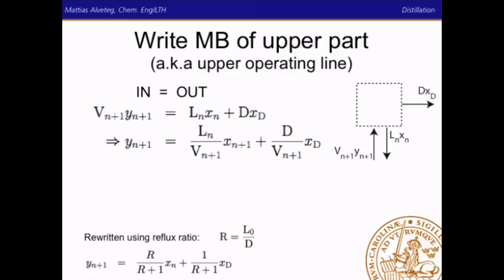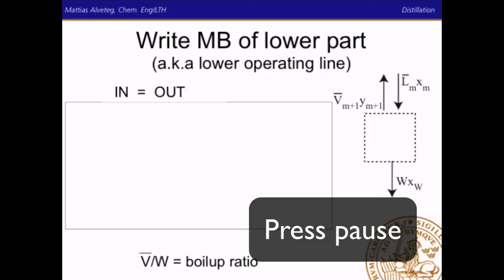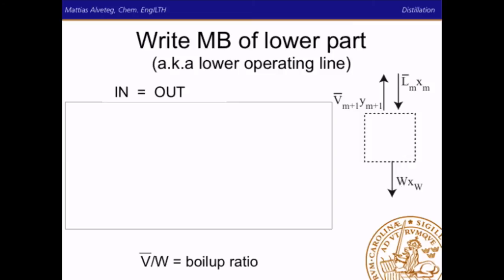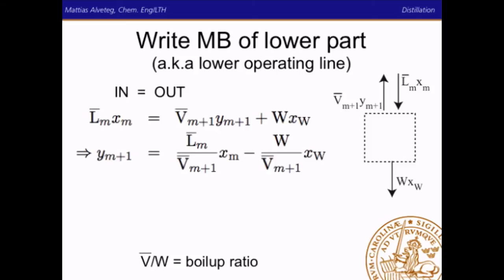For the lower part we again have one inflow and two outflows: L̄·x = V̄·y + W·x_W, where the overline denotes flows in the lower part of the column. We can rewrite that as y = (L̄/V̄)·x − (W/V̄)·x_W. V̄ divided by W is the boil-up ratio, which was mentioned earlier as an operating condition.